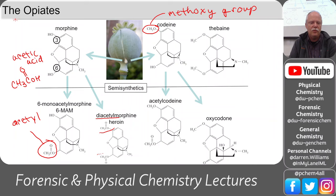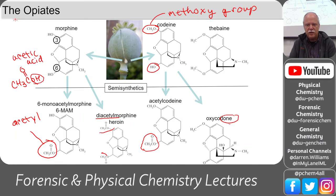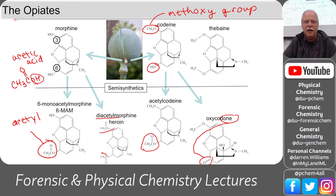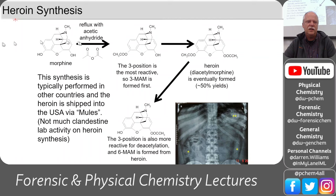Heroin has acetyl groups at both the 3 and 6 positions. Codeine has a methoxy group at position 3. If we take the hydroxy group at position 6 and oxidize it, we get oxycodone — the '-one' suffix is easy to remember because it's a ketone: you see the carbonyl group. The molecules look really complicated, but we're really just focusing on the chemistry of the 3-position and 6-position active sites.